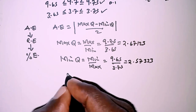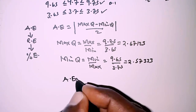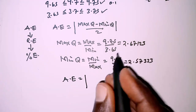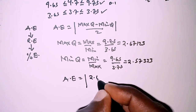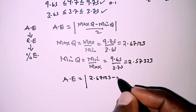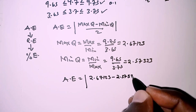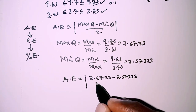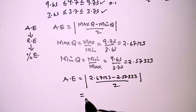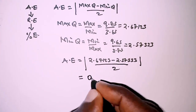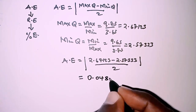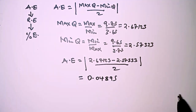With these we can now get the absolute error. The absolute error is obtained by taking the maximum quotient, 2.67123, minus the minimum quotient, 2.57333, and then dividing by 2. This works out to give us 0.04895.